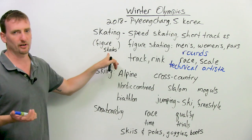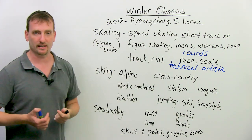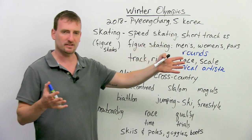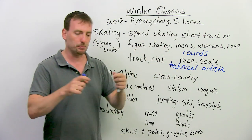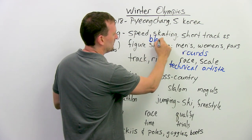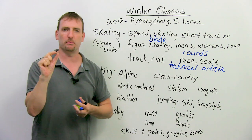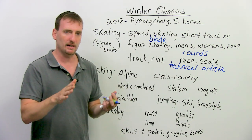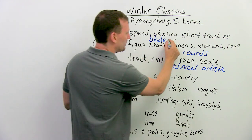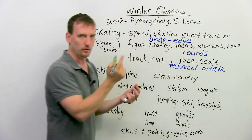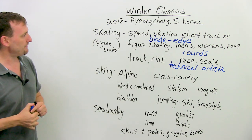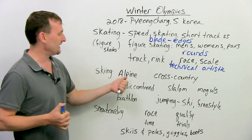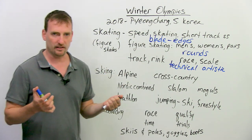Figure skating is very popular. The only real equipment figure skaters need are their skates and their costumes. Speed skaters wear a different type of skate — a much longer blade. They're basically on about three or four millimeters of metal with very sharp edges. That's all that's holding them up. Skiing is another very common and popular sport in the Olympics, with all types of different events.